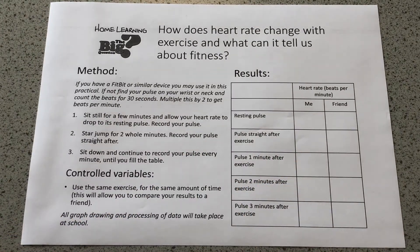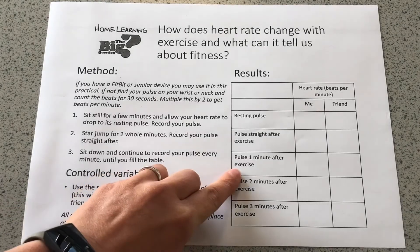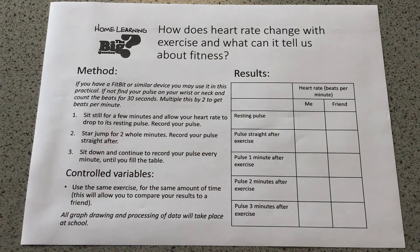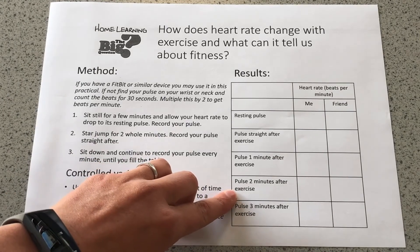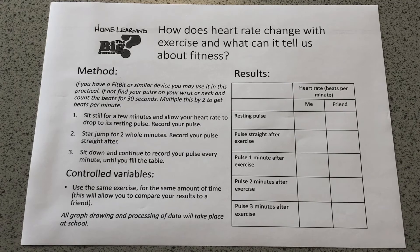As soon as you finish that exercise you should record your pulse rate - finding your pulse, counting for 30 seconds, then multiplying by two. 30 seconds later, which is one minute after exercise was stopped, sit down and find your pulse again, measuring for 30 seconds and multiplying by two. Then 30 seconds after that, which is two minutes after exercise, repeat the process, and again at three minutes after exercise. It's important that once you've counted for 30 seconds, it's only 30 seconds later that you do your next count.